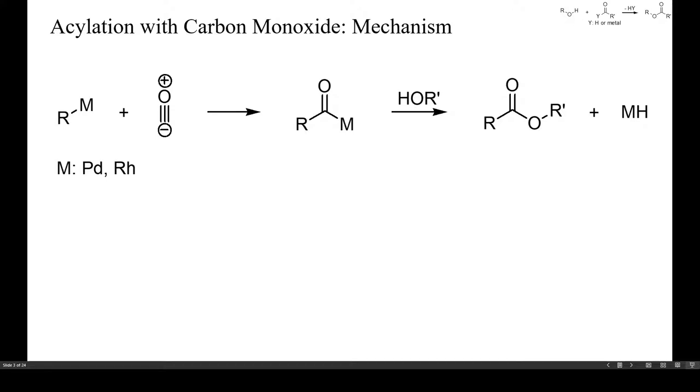The required organometallic intermediate can be generated from alkenes or from alkyl or aryl halides. It is also possible to convert alcohols into formates by treatment with carbon monoxide and some catalyst.